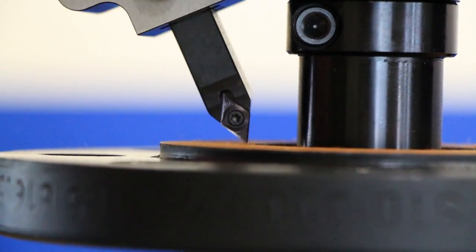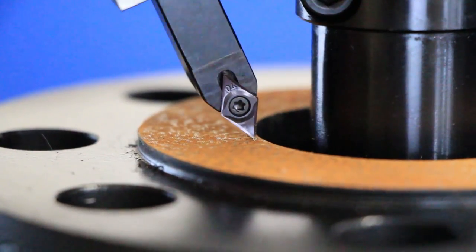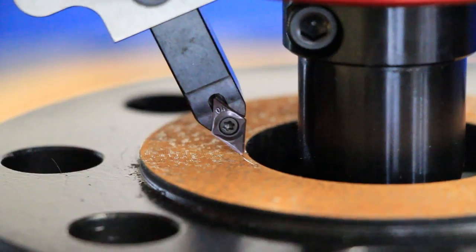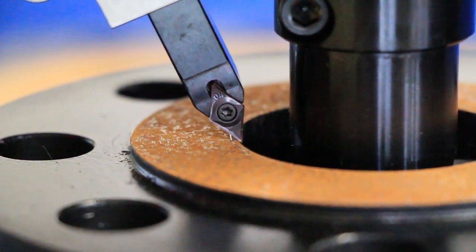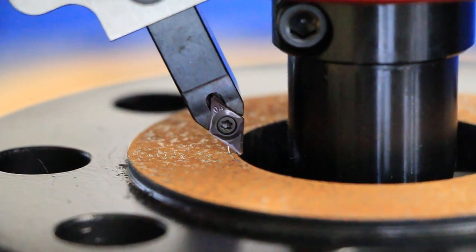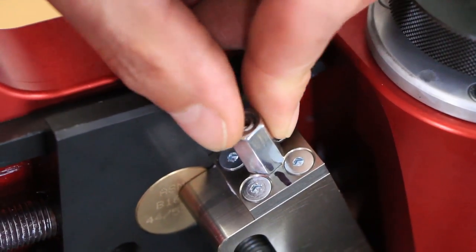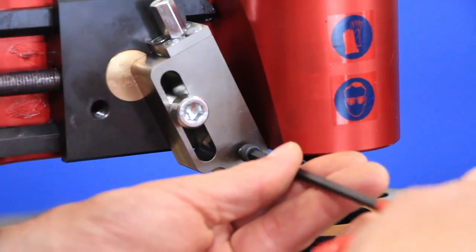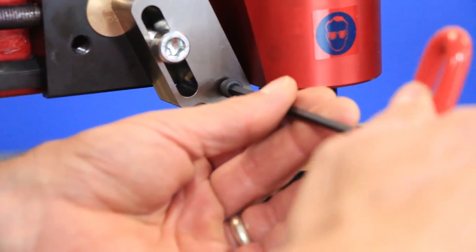To set the depth of the insert, advance the insert holder and rotate the tool back and forth until the insert barely scratches the surface of the flange. Once a small scratch is visible, pull the knob and advance the carriage inward so that the insert is above the inside diameter of the flange. Now advance the indexing nut another one twelfth of a turn to set the final depth of the insert and tighten the screw that holds the insert holder in place.